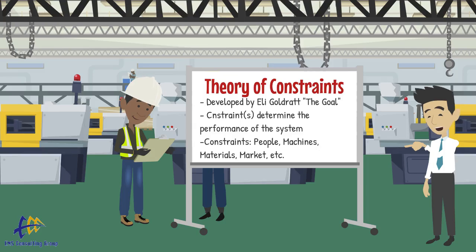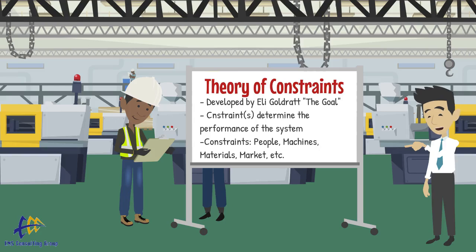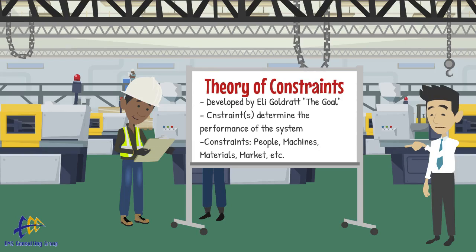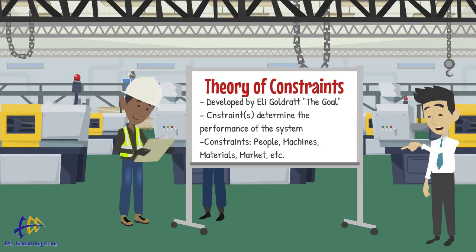A constraint is anything that blocks us from obtaining our goal. What are some examples of constraints? They can be people or staffing, materials, information, machines, policies, measurements, or even the market for our product or service.